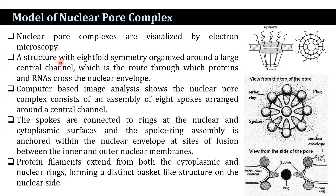The nuclear pore complex is visualized by electron microscopy and has a structure of 8-fold symmetry organized around a large central channel — the route through which proteins and RNAs cross the nuclear envelope. Computer-based image analysis shows the nuclear pore complex consists of an assembly of 8 spokes arranged around a central channel. The spokes are connected to rings at the nuclear and cytoplasmic surfaces, and the spoke-ring assembly is anchored within the nuclear envelope at sites of fusion between the inner and outer nuclear membranes. Filaments extend from both the cytoplasmic and nuclear rings, forming a distinct basket-like structure on the nuclear side.